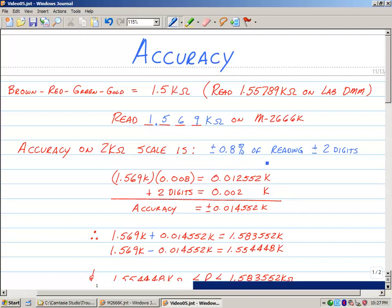If we take 1.569k and multiply it by 0.008 which is the 0.8 percent at this value in k ohms, which is about 12.552 ohms. If you add two digits what that means is that you take all the places here and you put 0002. So wherever the decimal point is just leave it there and you put a two in the last place and this is k ohms leave the k here. Now when you add those two numbers together you get 0.014552k. So if you take that number and add it to the reading and subtract it from the reading that becomes the range of values that you actually have for this resistor given the meter.